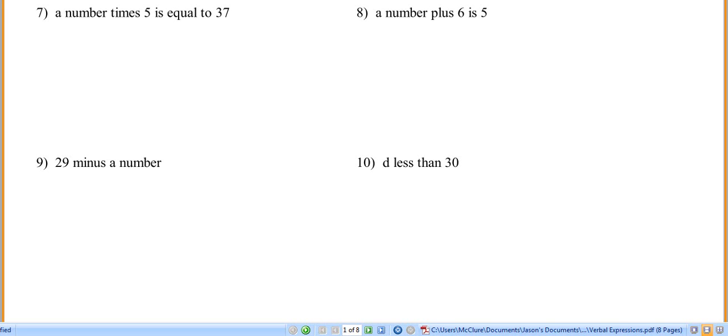Alright, I'm going to do 7, 8, 9, and 10. And that will close out this video here. So a number, we don't know what the number is, do we? Times 5 is equal to 37. So that's all we're doing. X times 5. What you're going to want to do for algebra is write it this way. That's what an algebra student would write it this way.